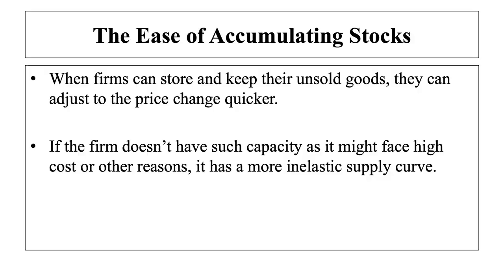The next determinant is the ease of accumulating stock. When firms can store and keep their unsold goods, they can adjust to price changes more quickly. Imagine there is a sudden price drop — the capacity to store unsold goods would make supply more responsive to changes, as the firm could wait to sell its stock at a higher price later. However, if the firm doesn't have such capacity due to high storage costs or other reasons, it will have a more inelastic supply curve.